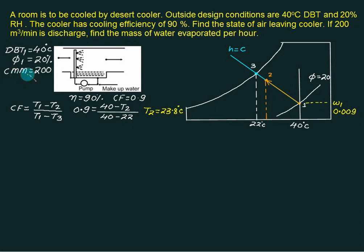Now first of all we will calculate the mass. To calculate the mass we must know the specific volume at point 1. To find out specific volume we will go to the graph.